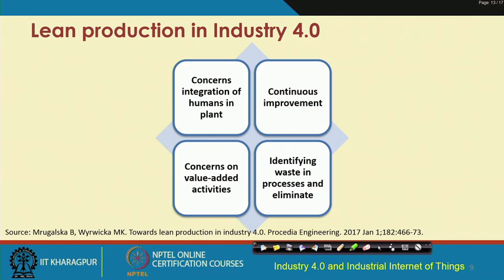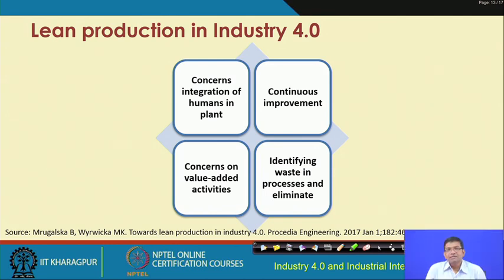In the context of Industry 4.0, lean production is paramount. Lean production in Industry 4.0 addresses four considerations: integration of humans in the plant, continuous improvement, focus on value-added activities, and identifying and eliminating waste from processes as soon as possible in an environment-friendly manner.